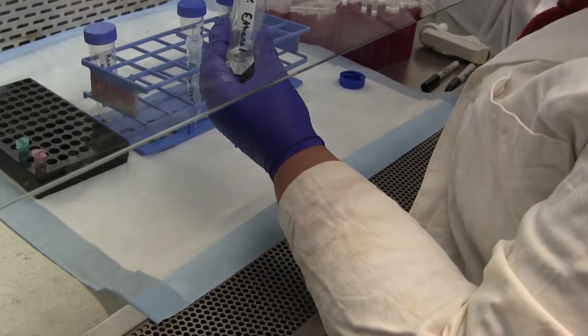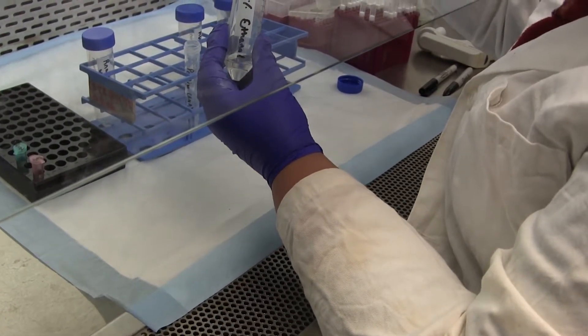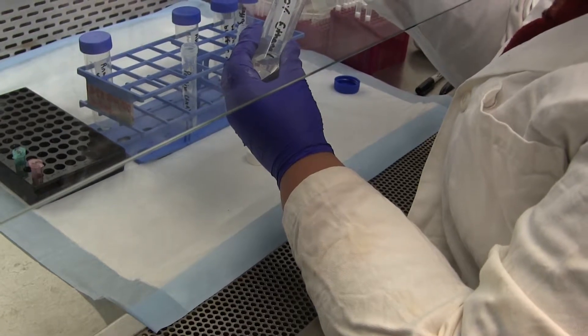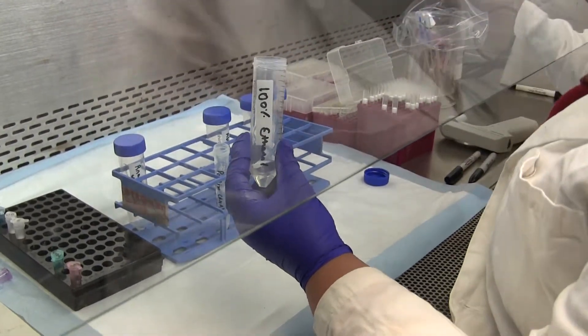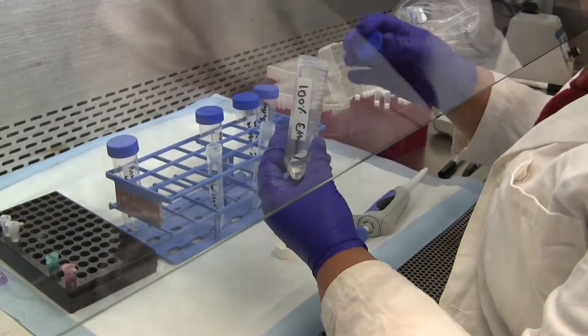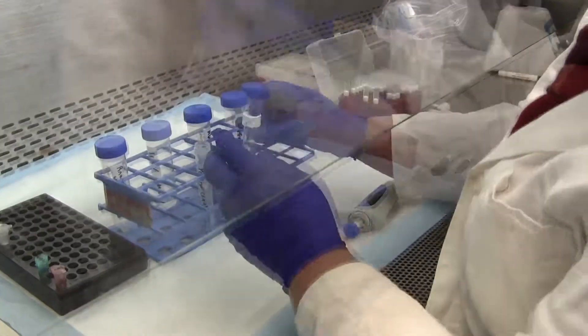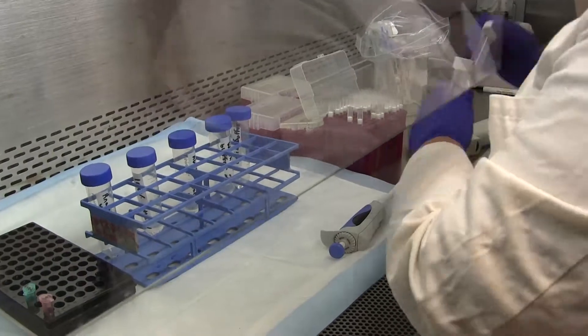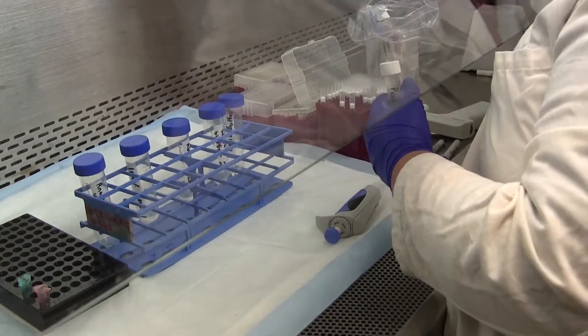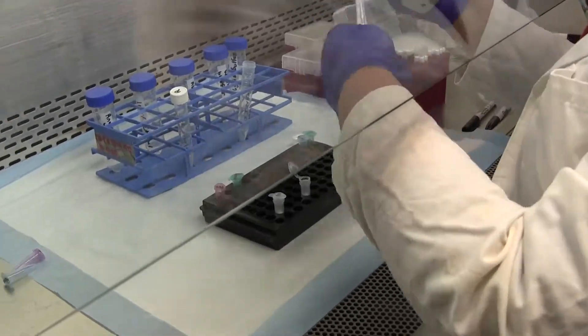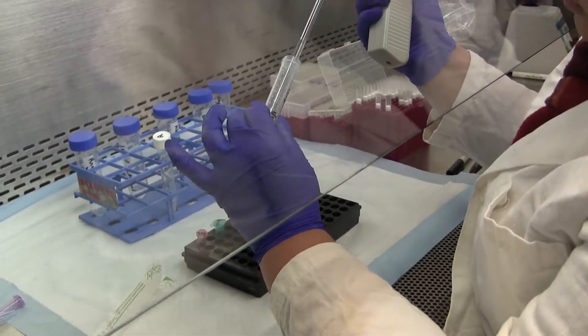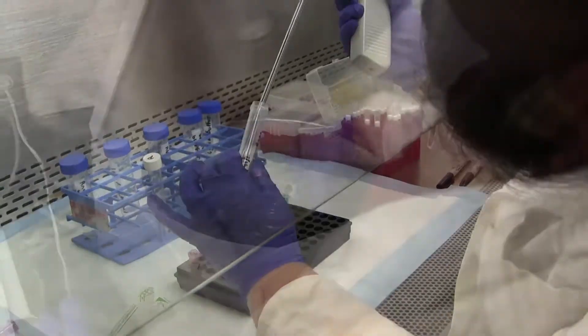Now we've got 750 microliters volume, so we're going to add 750 microliters of ethanol. And now we've got a total volume of 1.5 mils in each sample. I'm going to vortex briefly and then transfer 750 microliters at a time into the spin columns.